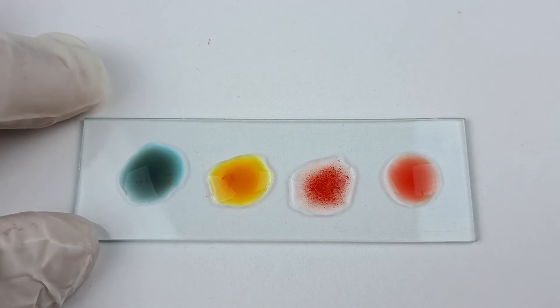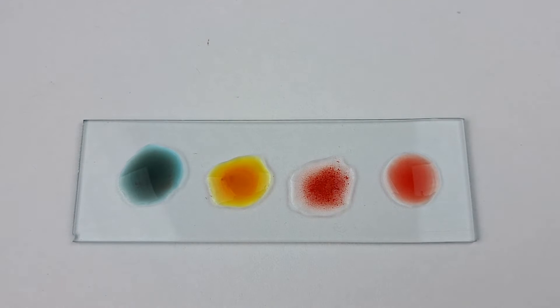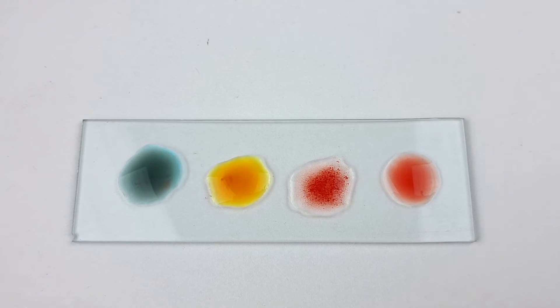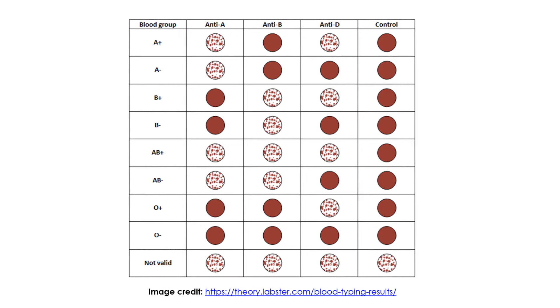The negative control is not expected to show clumping, in which case the experiment needs to be repeated. The blood group of the tested blood sample will now depend on which of the three drops on the slide exhibit RBC clumping. This is a photo collage of the various agglutination patterns that can be seen on the slide for the various ABO and RH blood groups.